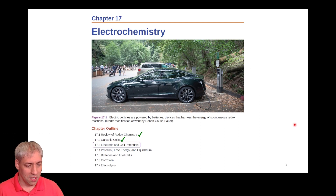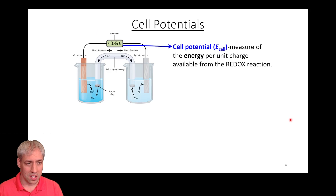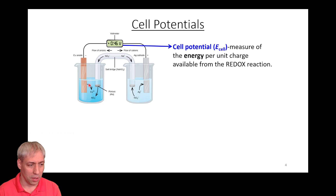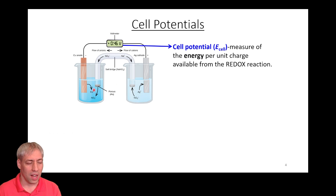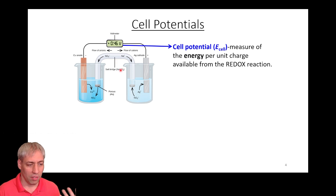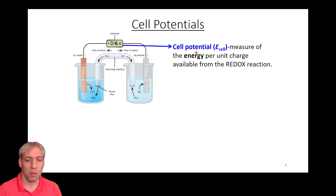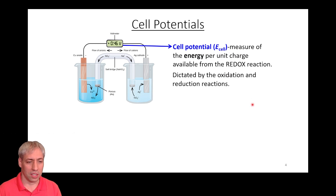We'll continue with 17.3 where we talk about electrodes and cell potentials. Previously we introduced the idea of a galvanic cell — copper metal on one side, silver on another, with silver ions turning into silver metal and copper turning into copper two plus — and we get a potential out of this. This voltage is what we describe as the cell potential, a measure of the energy per unit charge available from the redox reaction.